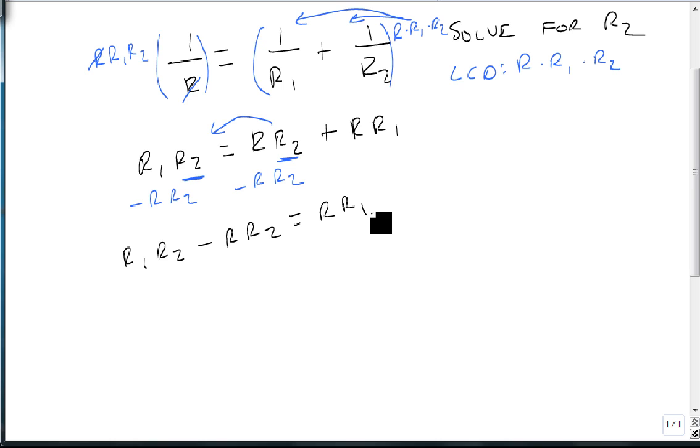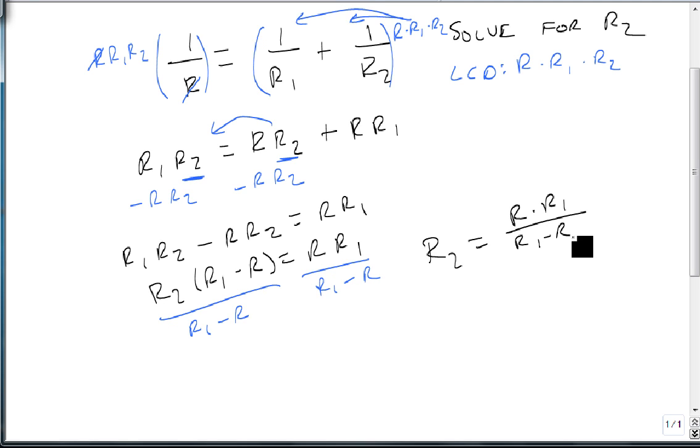We can now factor out an r2, leaving r1 minus r equals r times r1. Divide both sides by r1 minus r, and our final answer is r2 equals r times r1 over r1 minus r.